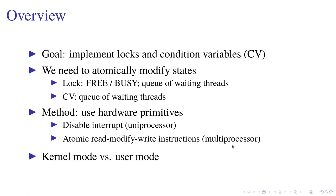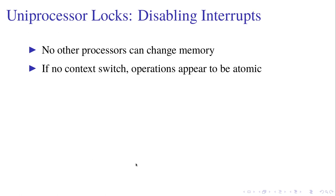This discussion will mainly focus on implementing locks and condition variables in kernel mode, and at last we are going to talk about how to implement them in user mode. When implementing locks in uniprocessors, we are just going to disable the interrupts. It's very easy because no other processors can change memory. After we disable the interrupts there cannot be a context switch, so operations in one thread appear to be atomic.